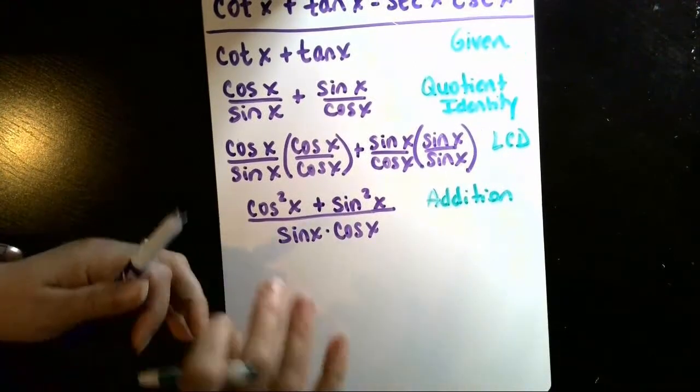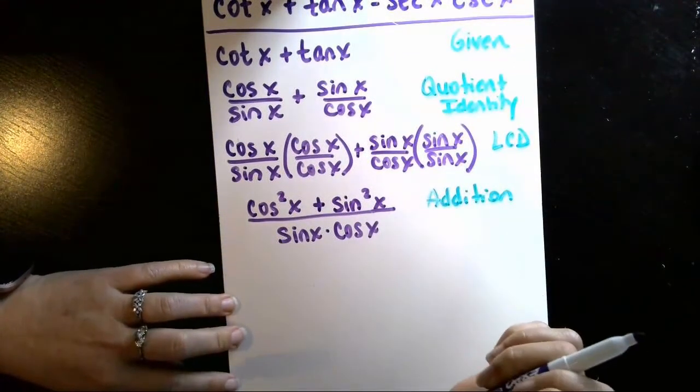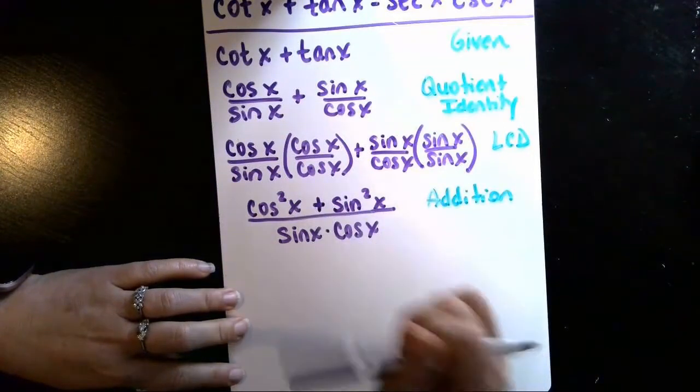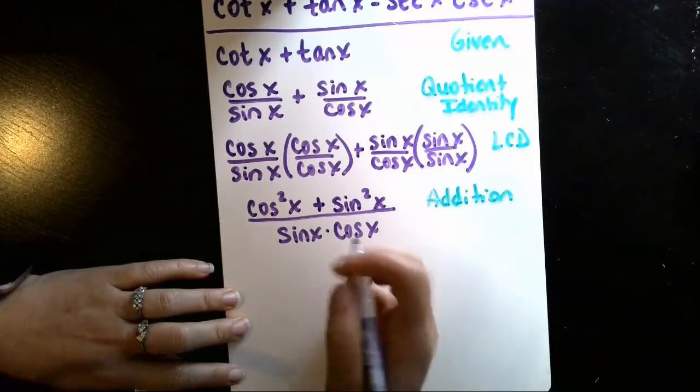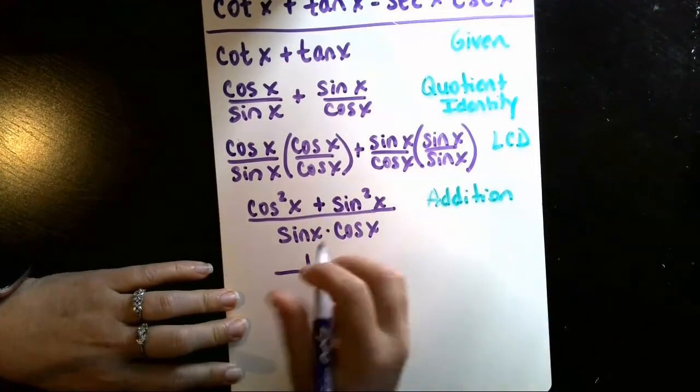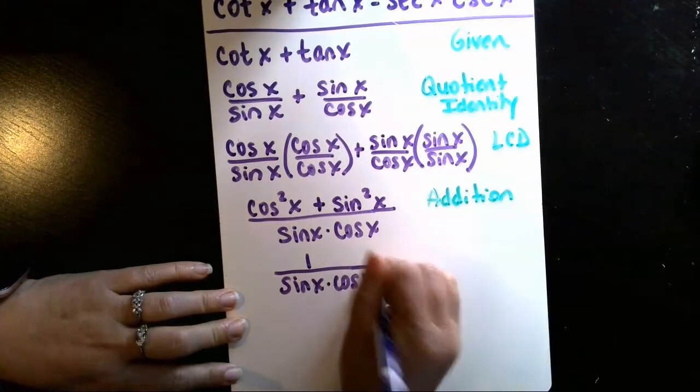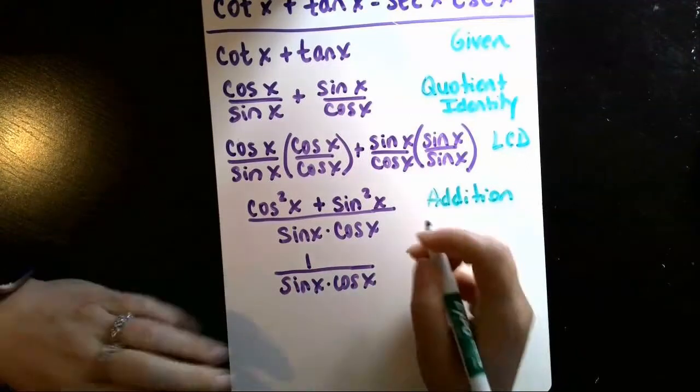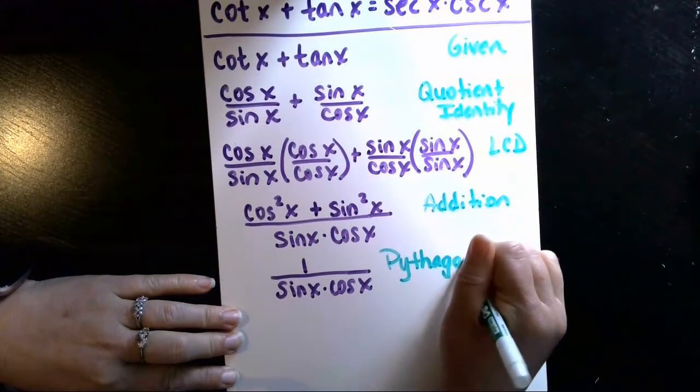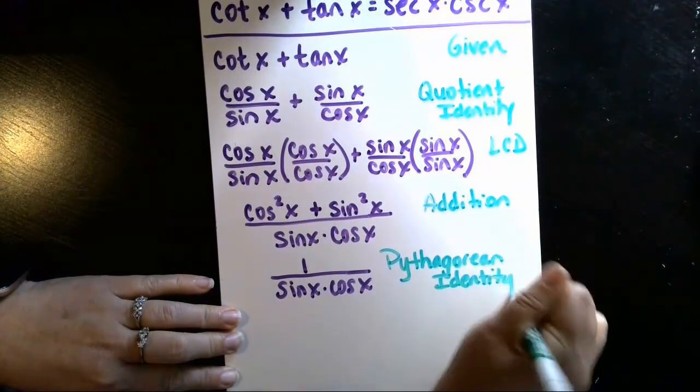So we're getting closer. I'm happy with that numerator because I recognize that as a Pythagorean identity. I remember that sine squared x plus cosine squared x is one, so I can swap that out now, the numerator, and I'll be left with one over the sine of x times the cosine of x. That was using a Pythagorean identity.